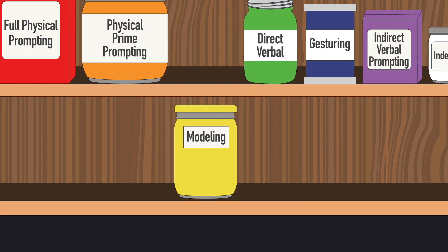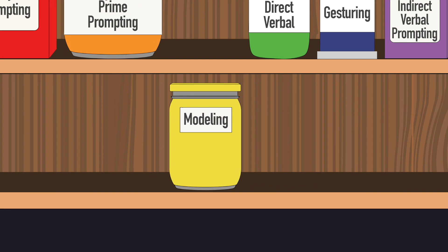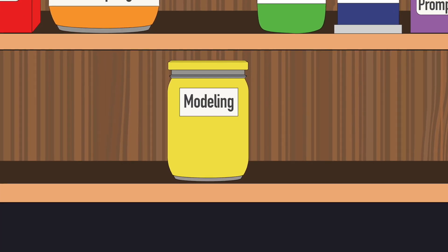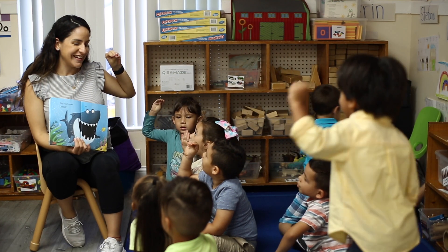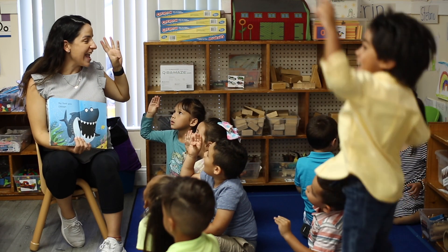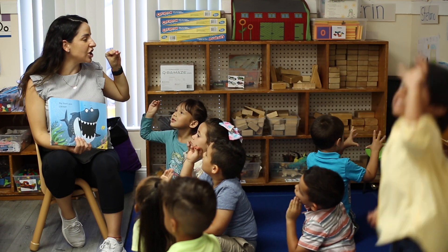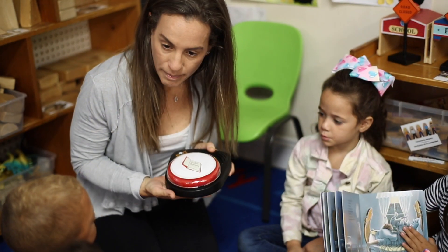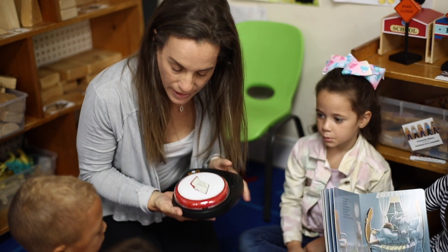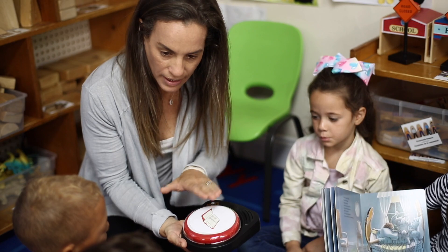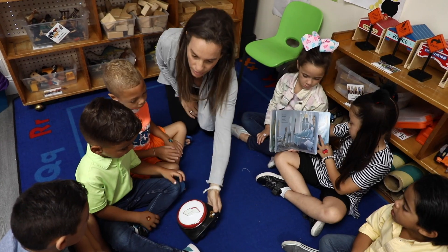Modeling: the child performs the task after the teacher shows them how by doing the task first. For example, the teacher uses an AAC device to make a request, then provides the AAC device to the child and asks him or her to do the same. "I'm going to show you how to press it. Now it's your turn."